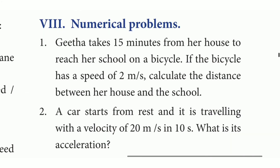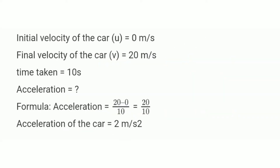Second numerical: A car starts from rest and travels with a velocity of 20 meters per second in 10 seconds. What is the acceleration? Initial velocity = 0 m/s, final velocity = 20 m/s, time = 10 seconds. Acceleration = (20 − 0) ÷ 10 = 20 ÷ 10 = 2 meters per second square.